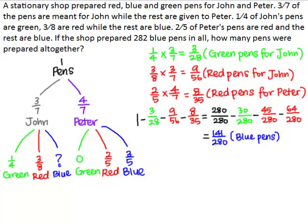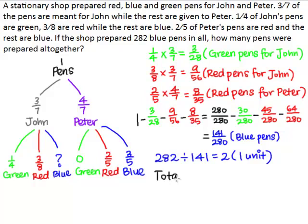From the question, we know that the shop prepared 282 blue pens in all. So we take 282 divided by 141, which gives us two. Two is the value of one unit. To find the total number of units, we refer to the denominator, which is 280. To find the total number of pens, we take 280 times 2, which gives us 560. And so our answer is 560 pens were prepared altogether.